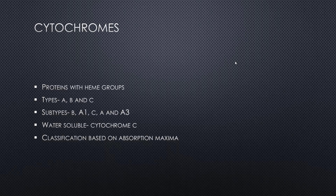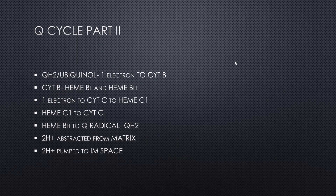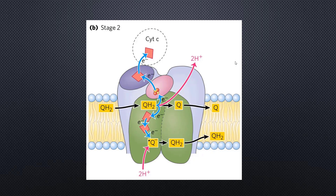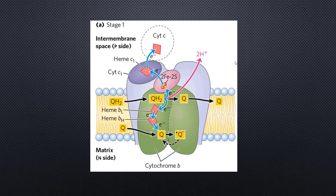Now let's get down to business regarding the specificities of the Q cycle. The Q cycle has been divided into stage 1 and stage 2. Now what happens in the Q cycle?